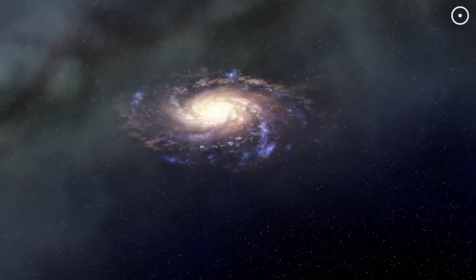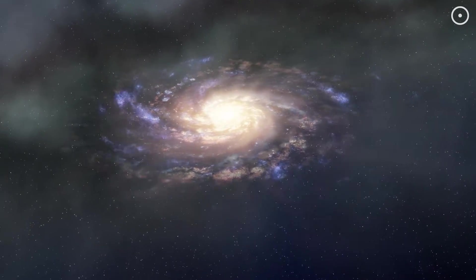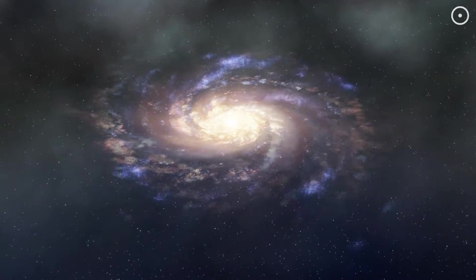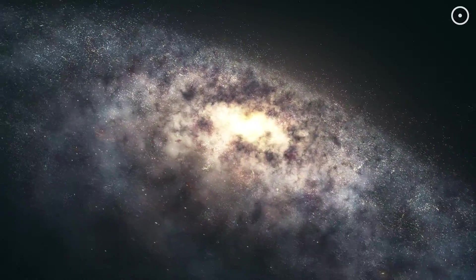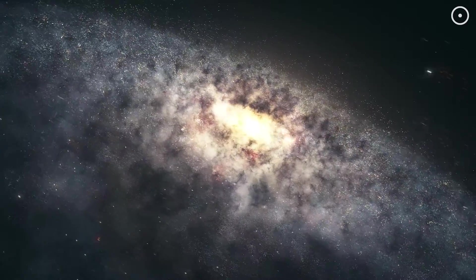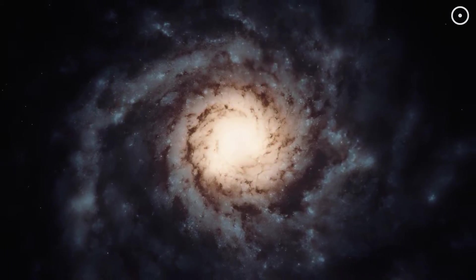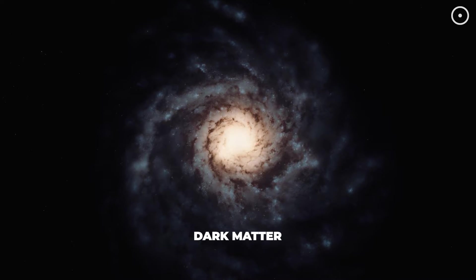For example, when astronomers look at galaxies, they notice that the stars at the edges of these galaxies are moving way faster than they should be. If it were just the visible matter, like stars and gas, these stars would fly off into space, but they don't. Something unseen, something powerful, is holding them in place. That's dark matter.